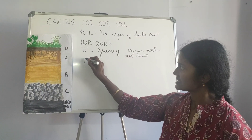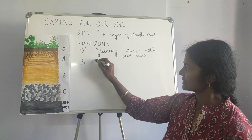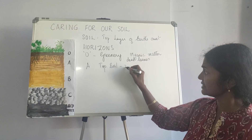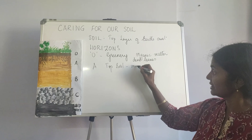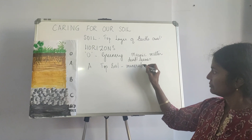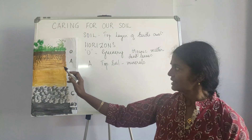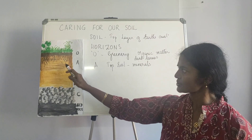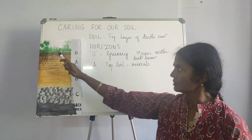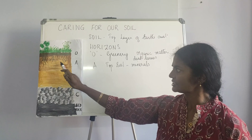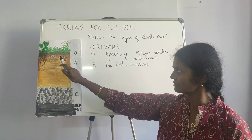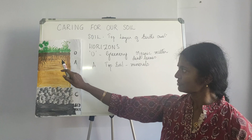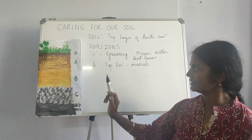The next horizon A is actually called the topsoil. This is rich in minerals, and because it is rich in minerals, all the plants and trees send out their roots, and these roots find their place in this layer A.